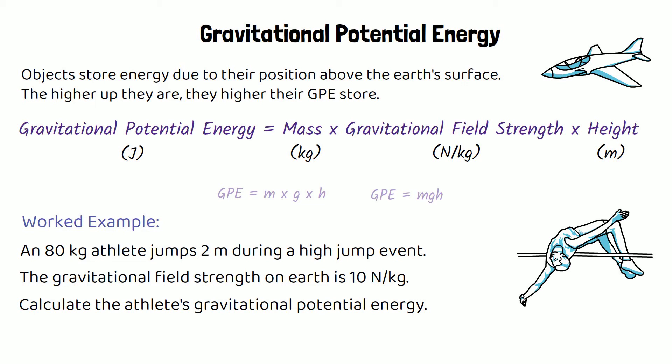We're going to need to use that equation, GPE equals MGH, mass times gravitational field strength times height. We know that the mass of the athlete is 80, gravitational field strength is 10, and the height they've jumped is 2.